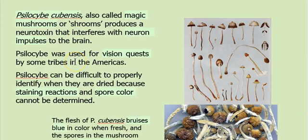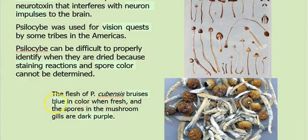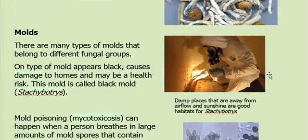We opened the story with Psilocybe cubensis, sometimes called the magic mushroom — there are different species. Used historically for vision quests and altered states. One problem is when they are dried, you cannot see the blue staining reaction or the spore color. So if someone hands you a dried one, you don't really know what it is — so be careful out there. Molds — nobody likes molds. There are many different types and they belong to different groups.